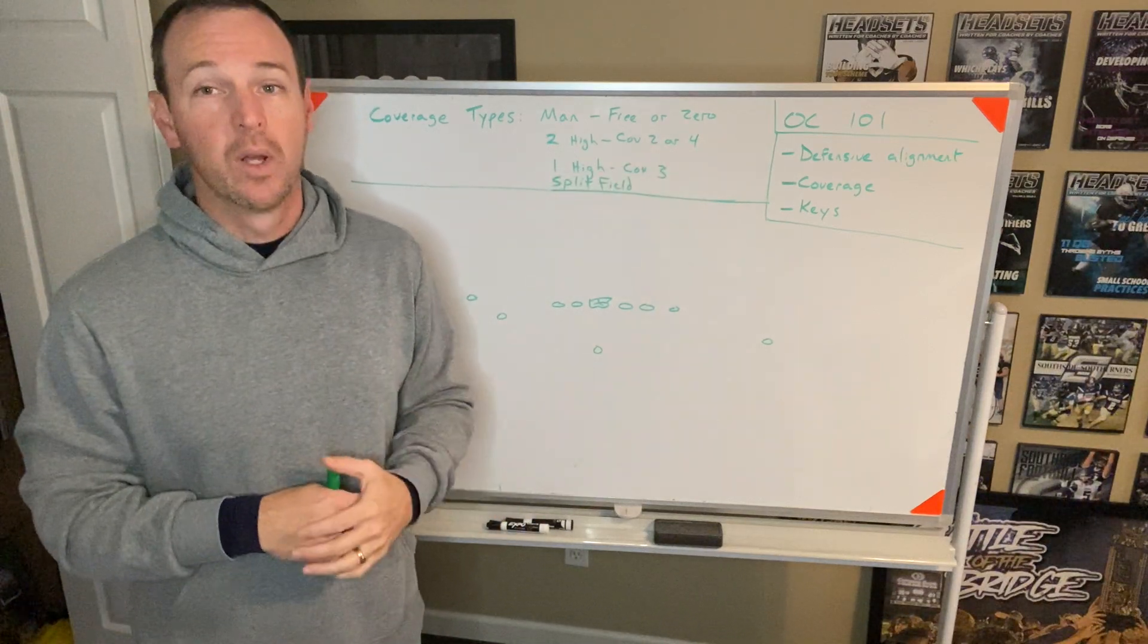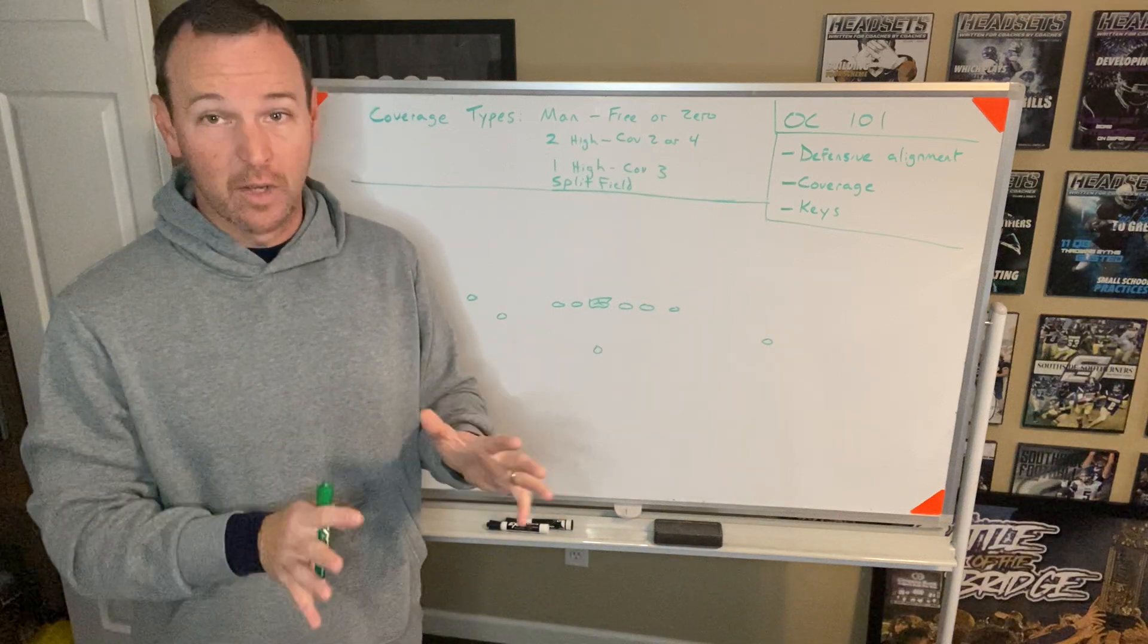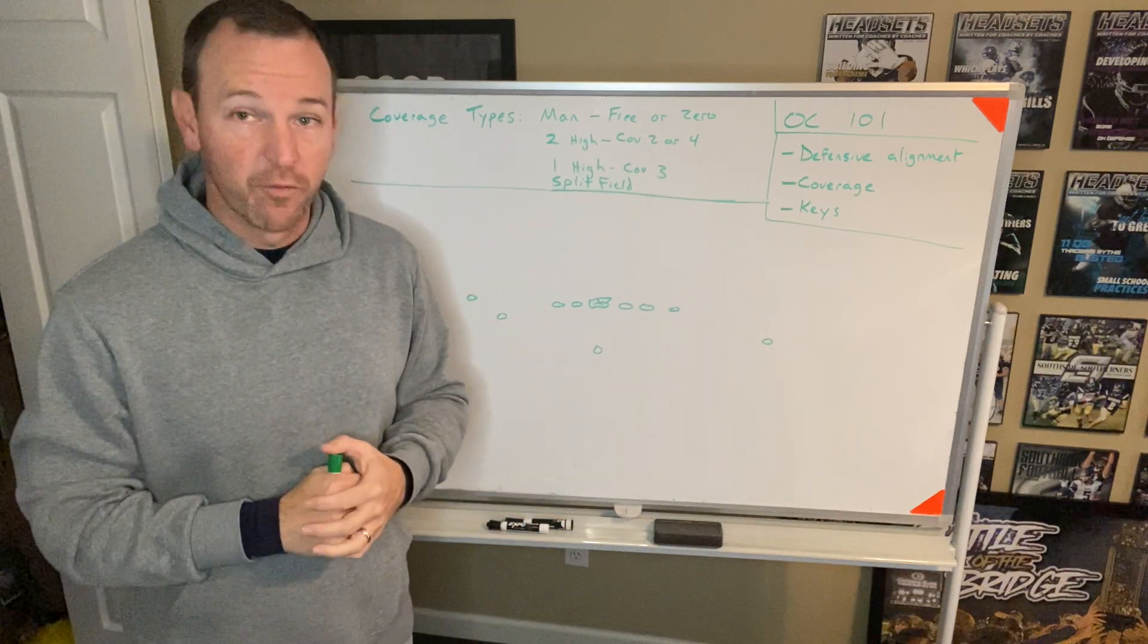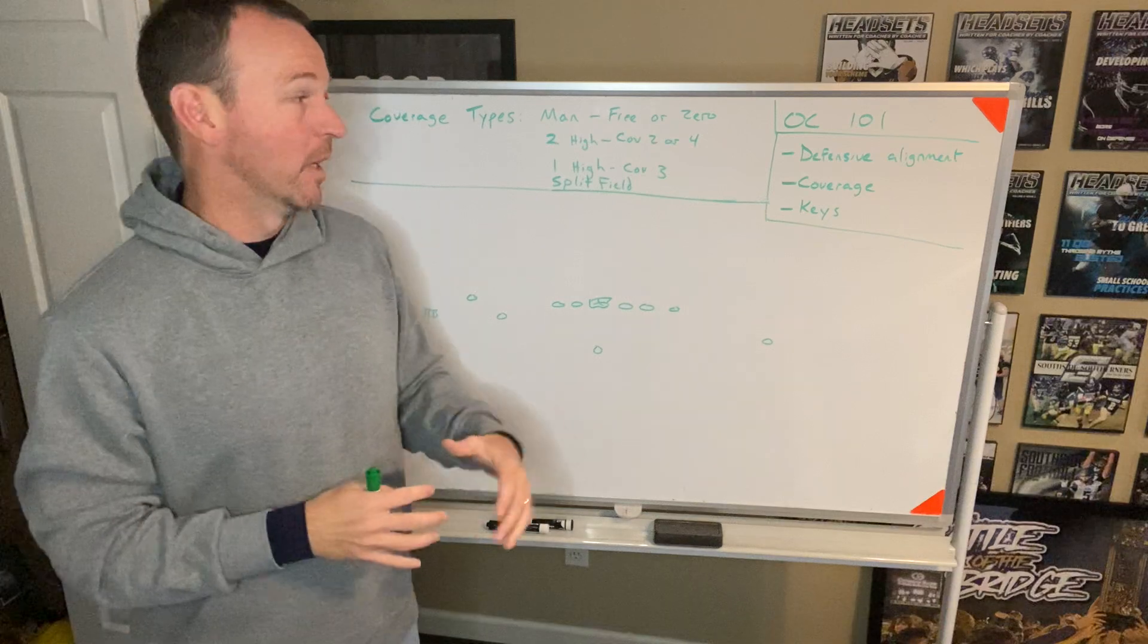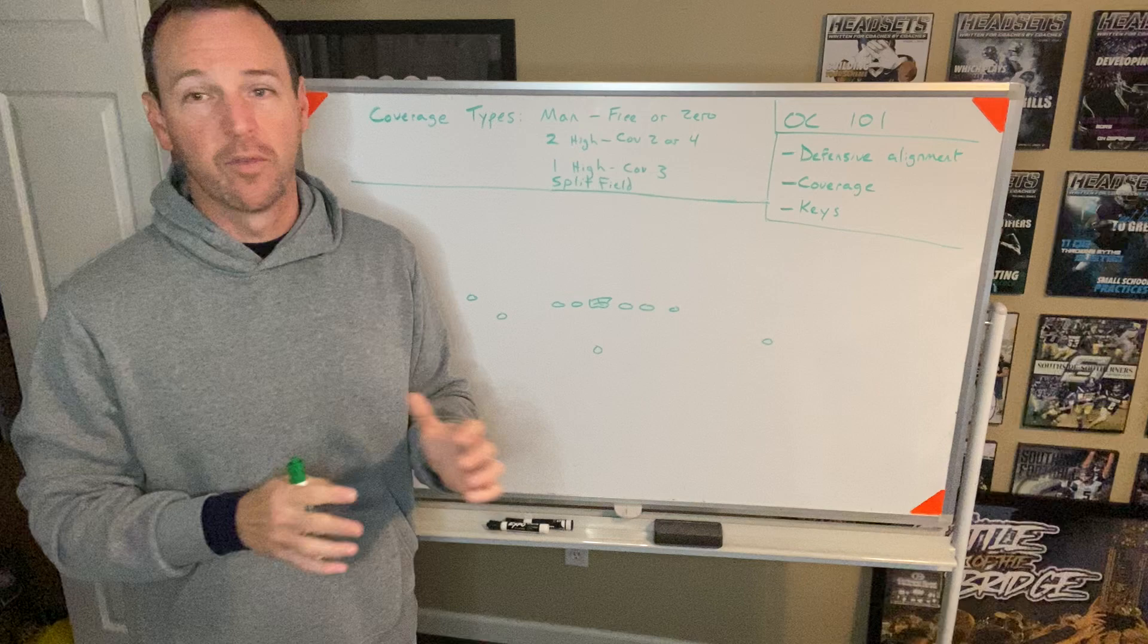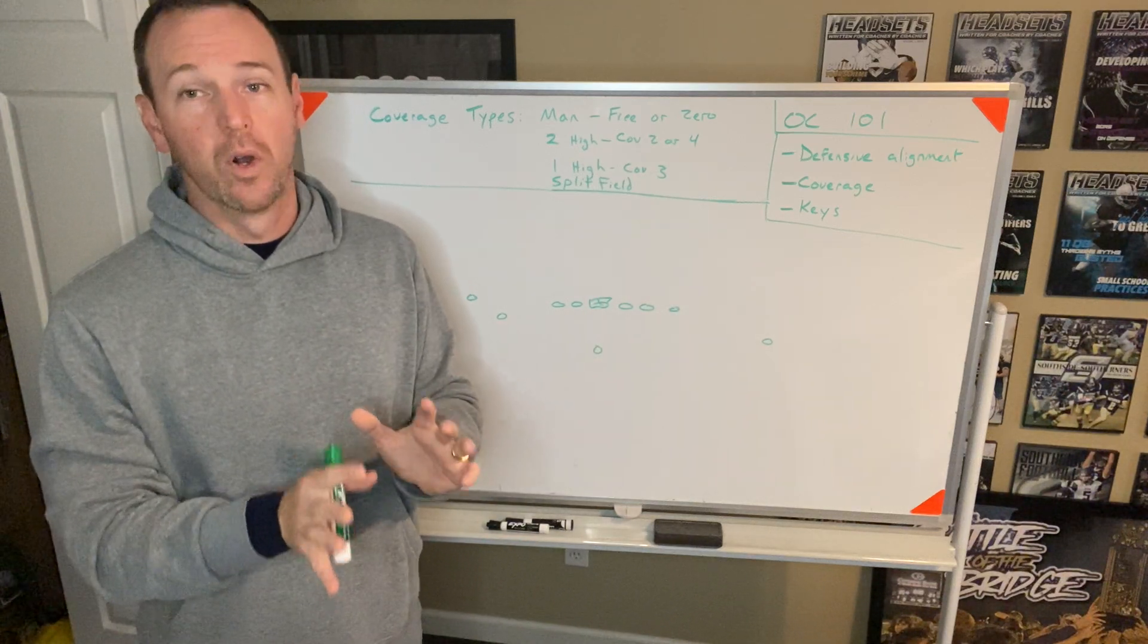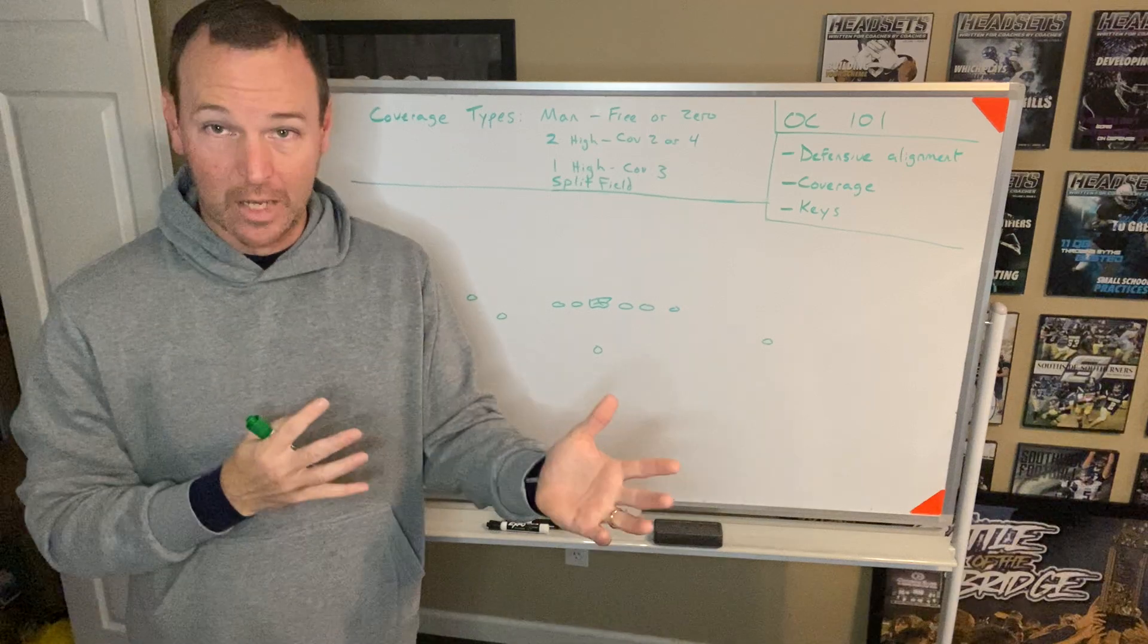When you hear cover two, cover four, major difference: cover two, the corners are responsible for the flats, safety is responsible for deep. Cover four is more of a read. And then there are a lot of these cover two, cover four read combo coverages where a different guy may end up flat and deep. But essentially, it's zone where one guy has one area, one guy has the other.